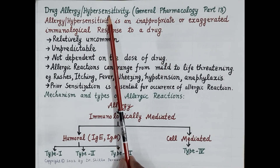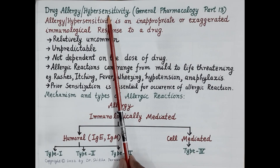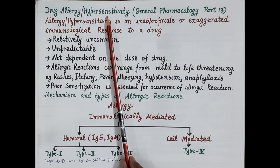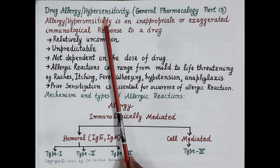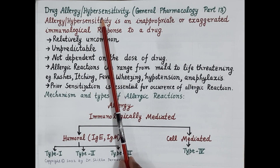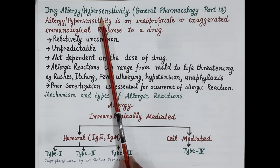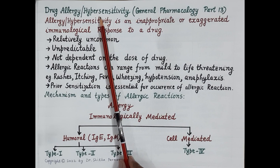As we all know, the immune system protects the body against harmful substances called antigens. All noxious or harmful substances or antigens activate the immune system of the body. Activation of the immune system activates T-cells and B-cells. T-cell activation produces cytokines, that is mediators of inflammation, while B-cell activation produces antibodies. The function of cytokines and antibodies is to destroy the antigen, to destroy the harmful substance, and to protect the body. This is the normal immune response of the body.